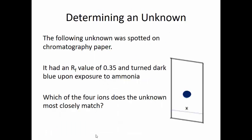Here's an unknown question: determine the following unknown. It was spotted on chromatography paper, it had an RF value of around 0.35, and it turned dark blue upon exposure to ammonia. Which of the four ions does the unknown most closely match? When you go take the quiz, you'll answer this question.